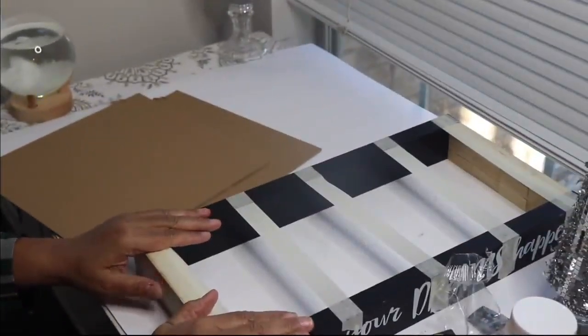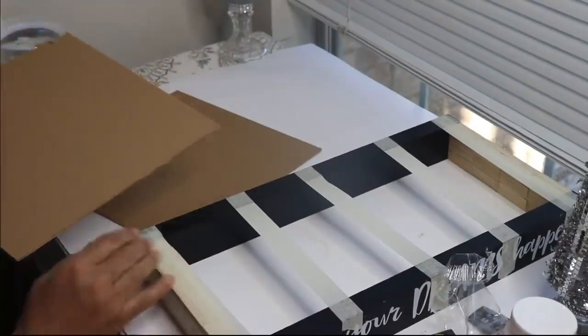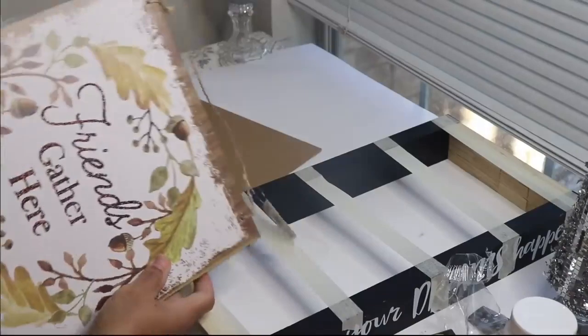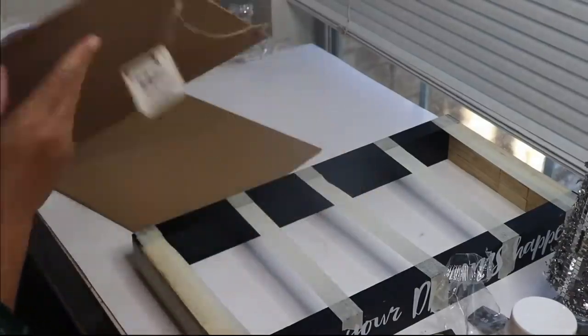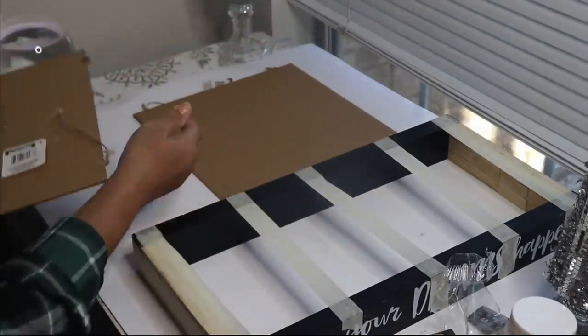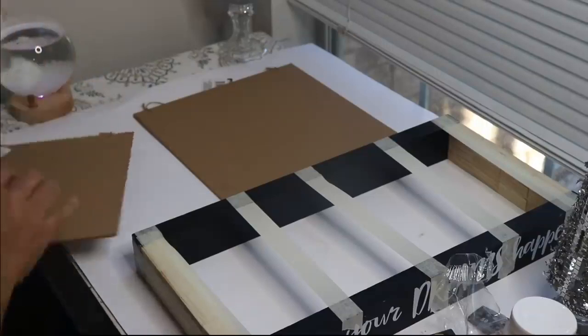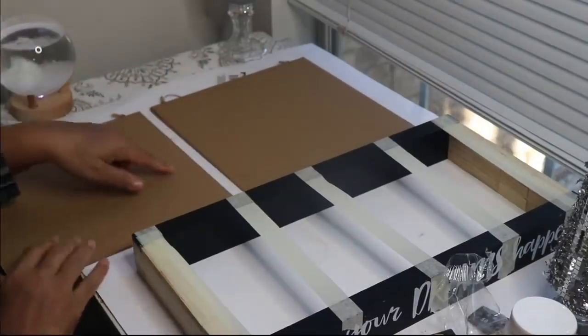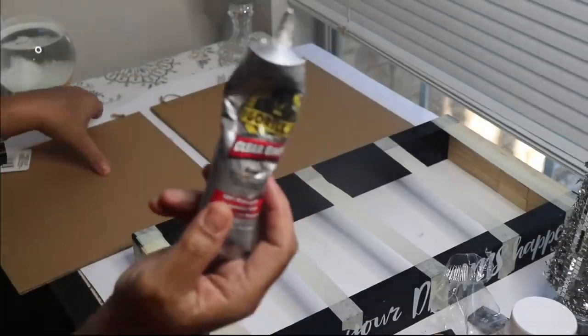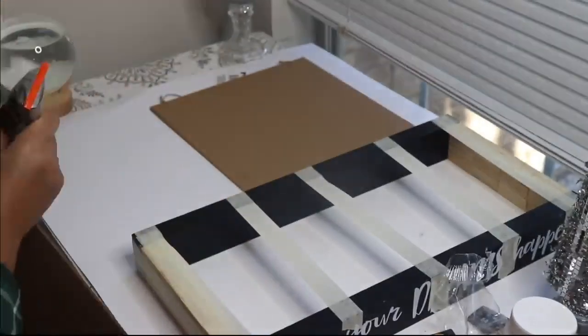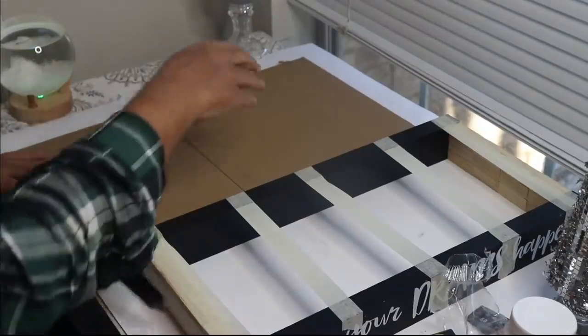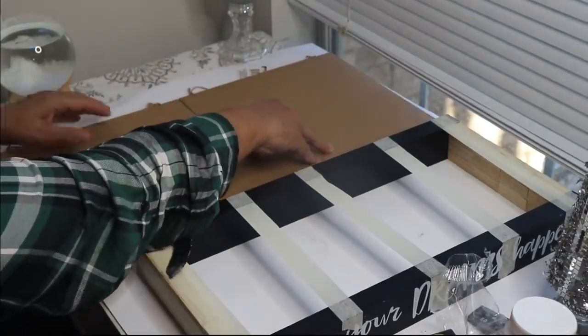So this has been drying for about two hours. So I want to go ahead and start gluing my base onto my tray. And again, I'm using these little boards from Dollar Tree. And I'm sure that they have some for Christmas as well. So I'm just going to line this up, put some glue between the two. Again, I'm using the Gorilla Glue. Press them together.